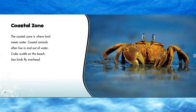Coastal zone. The coastal zone is where land meets water. Coastal animals often live in and out of water. Crabs scuttle on the beach. Seabirds fly overhead.